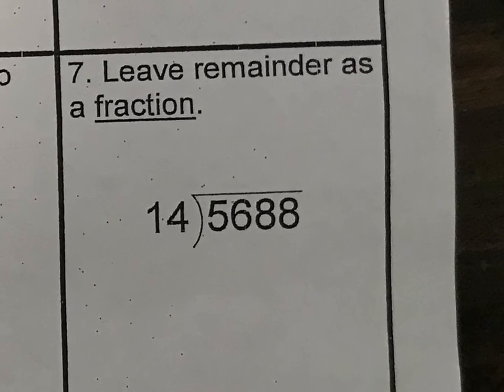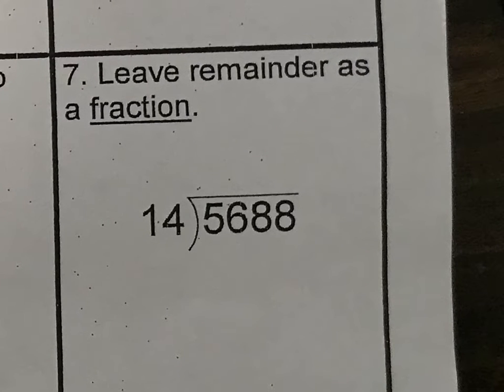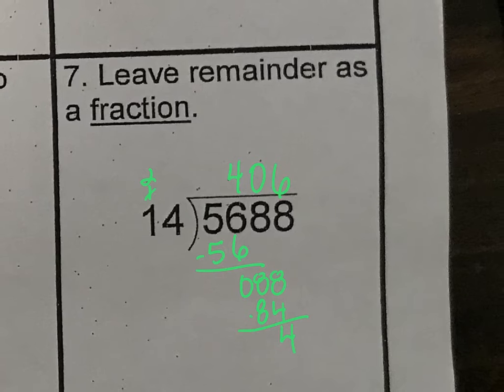Number seven, leave a remainder as a fraction. So we're just going to straight divide it. So 14 won't go into 5, but it'll go into 56. I would say four times. Evenly good. Okay, 14 won't go into 8. So we put a 0 there, and we drop down the other 8, and then it goes in there. And 14 will go into 88 six times. We got 84, and it has 4 left over. So we leave it right there.